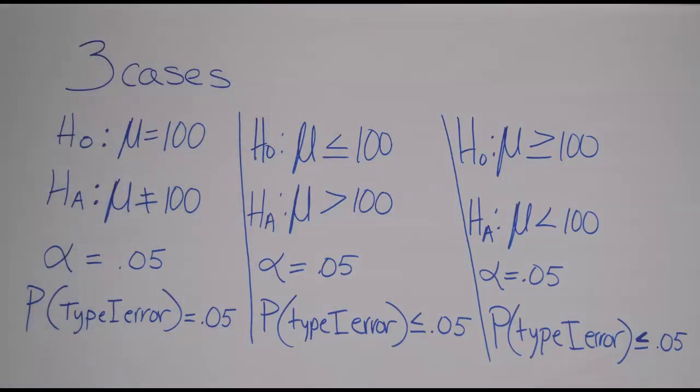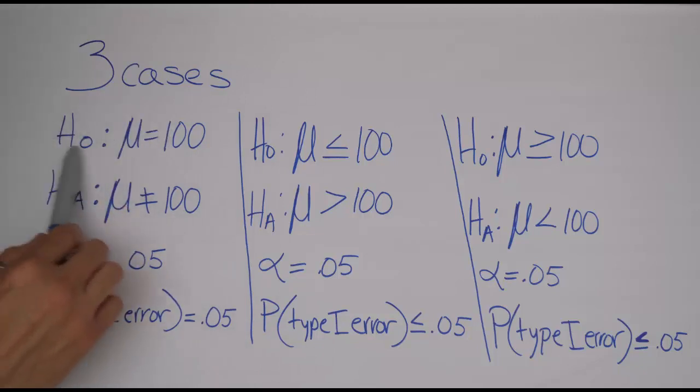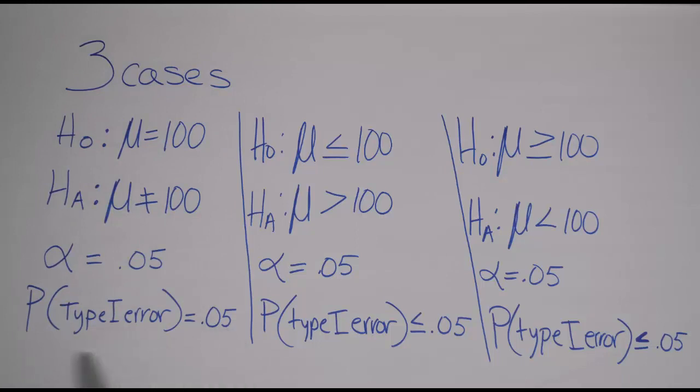So if you're in a class where you restrict your null hypothesis to the equal case only, then you only need to worry about one case when you're trying to figure out the probability of a type 1 error. But in my classes, for my students, they need to consider three separate scenarios.